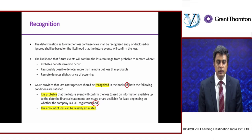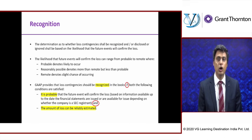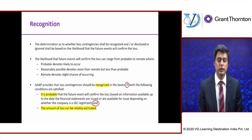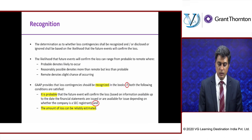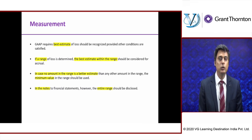For recognition, GAAP provides that loss contingencies should be recognized in the books — that means you pass a journal entry: debit expense, credit liability — only if both of the following conditions are satisfied: number one, it is probable (it is likely); and number two, the amount of loss can be reasonably estimated. If both conditions are not met, then you will not record it.